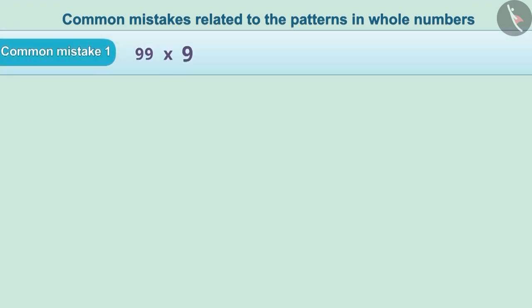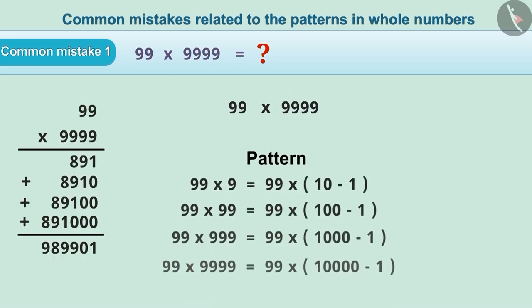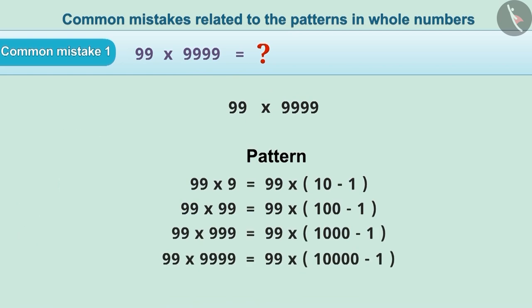99 multiplied by 9999 is equal to... To solve this question, we often multiply the given numbers. It can be easily solved with the help of patterns, but it is difficult to multiply 99 and 9999.